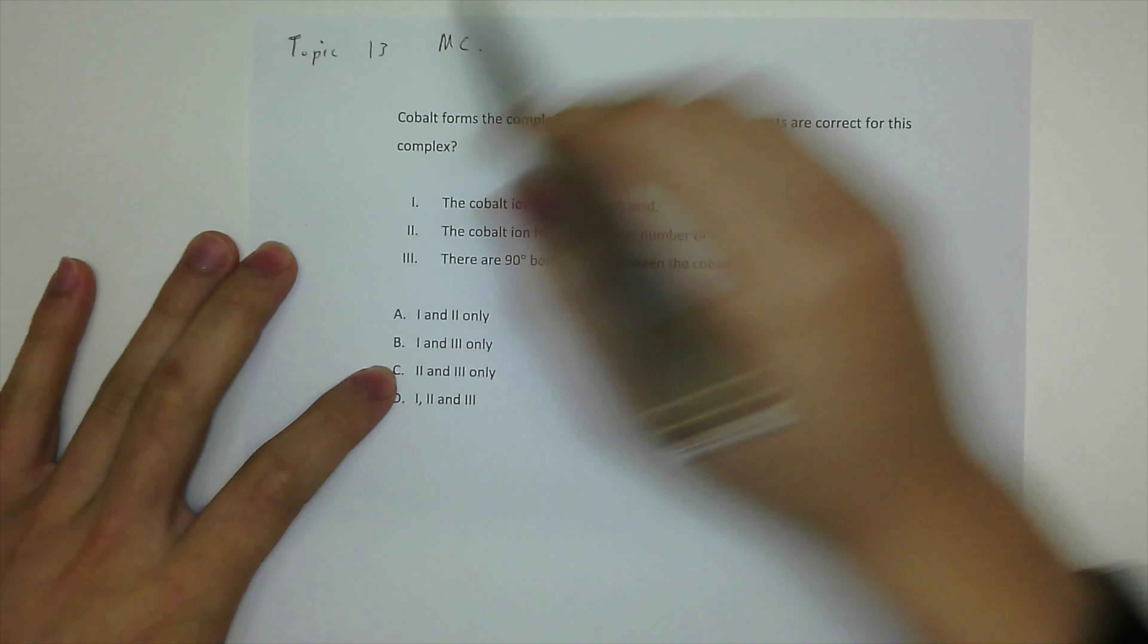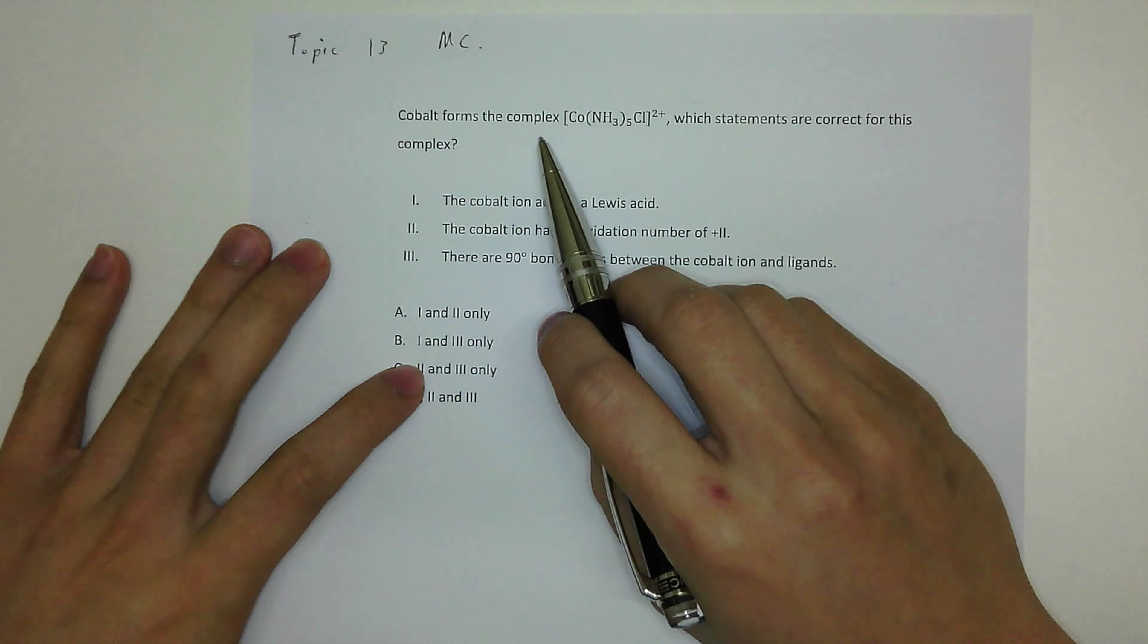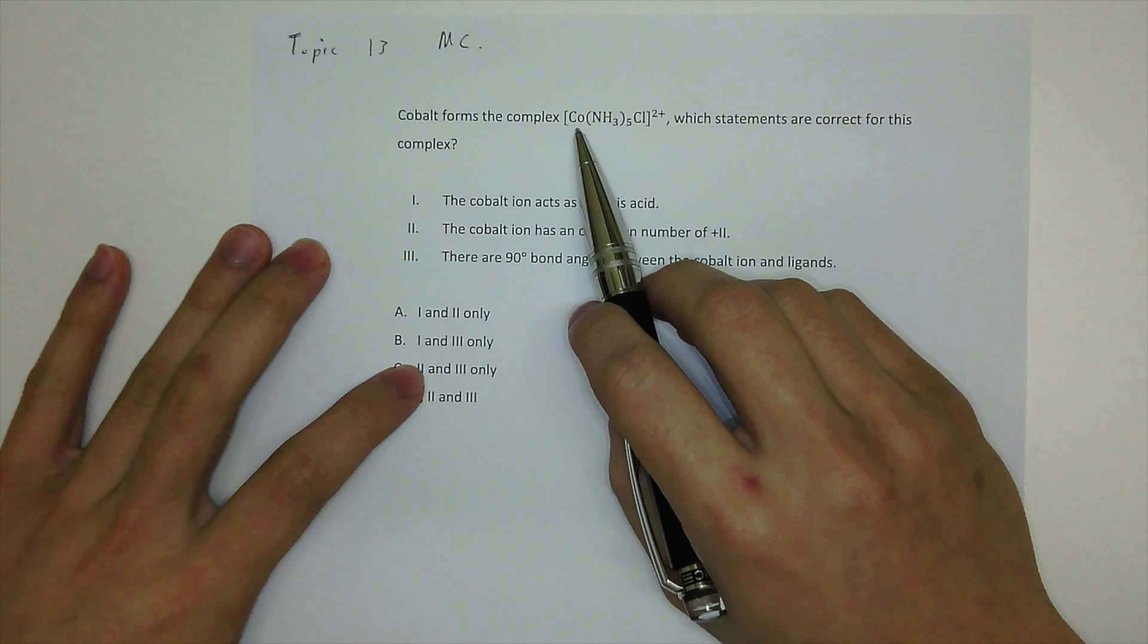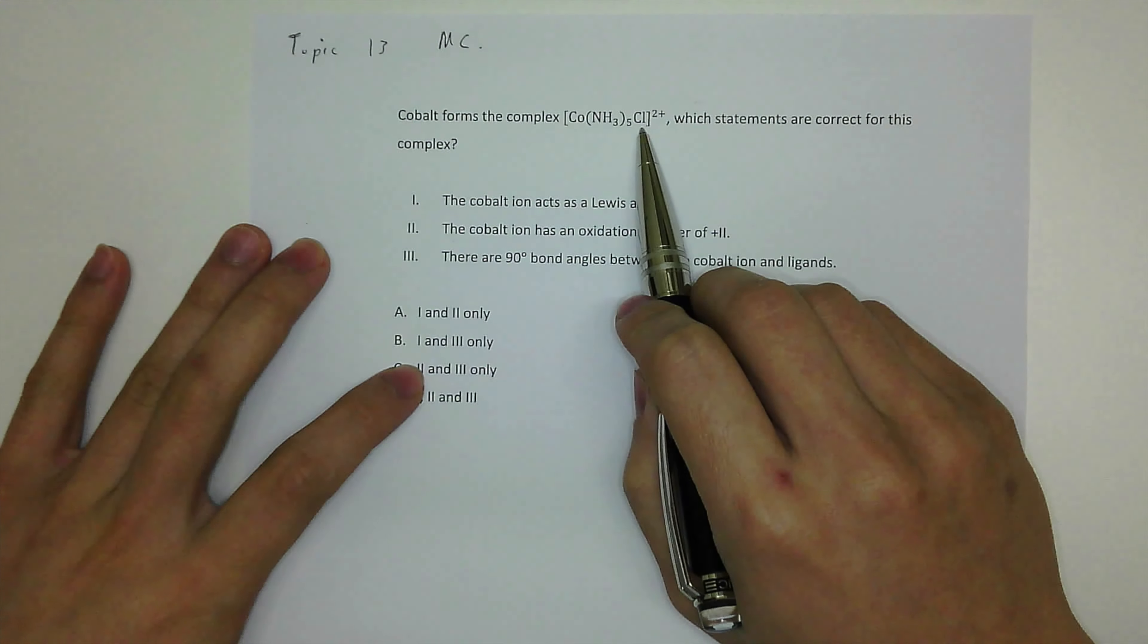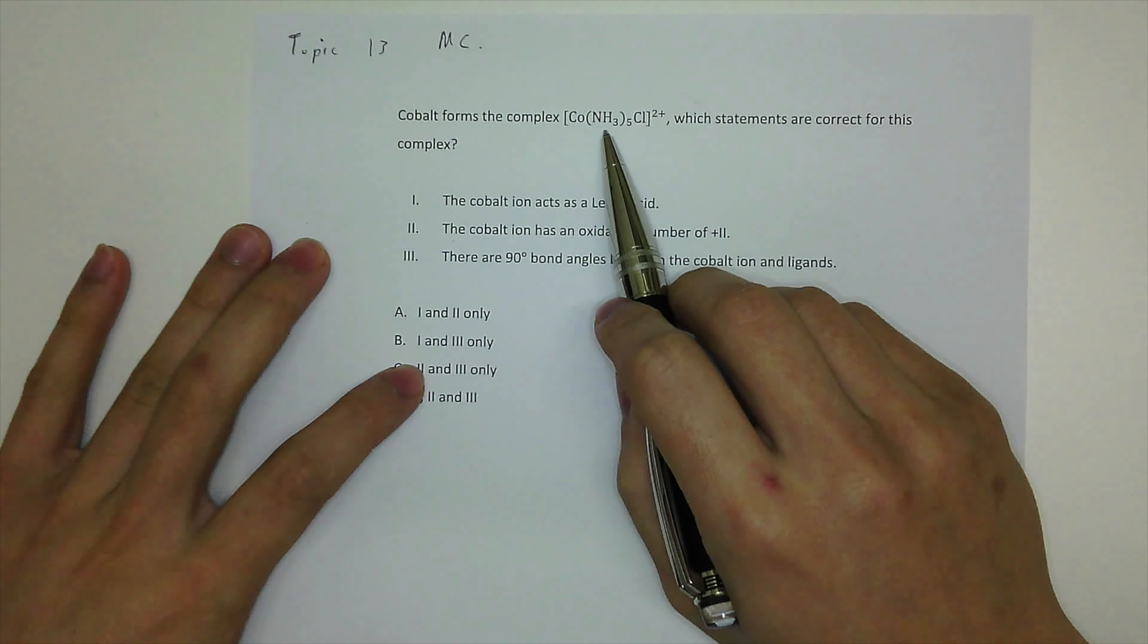It's an MC question from past paper. Cobalt forms a complex, the central ion is a metal ion cobalt with six ligands, one chloride ion and five ammonia ions, ammonia ligand.